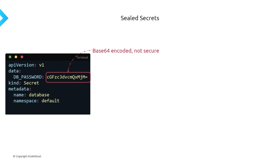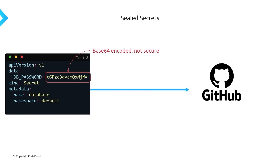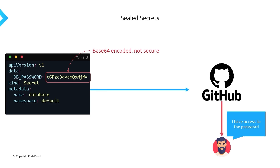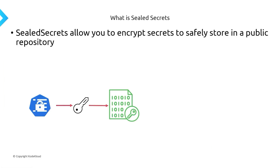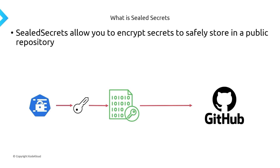With your password essentially being open like this, if you decide to check your Kubernetes manifest into a GitHub repo, then anybody with access to that repo now has access to your database password. That's ultimately why Sealed Secrets was created — to address this situation. What Sealed Secrets does is it allows you to encrypt secrets that you can safely store in a public repository, so you can upload your manifest to GitHub without worrying about anybody getting access to your secrets because it's going to be encrypted while it's in your Git repo.